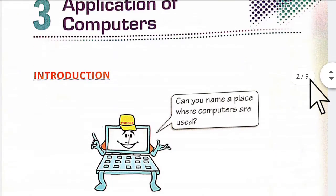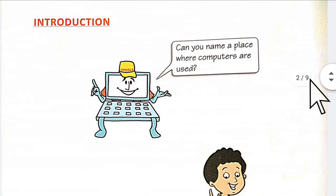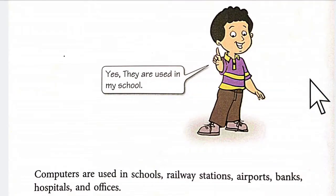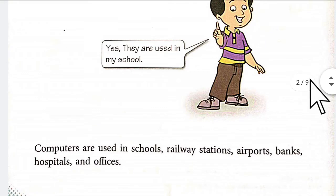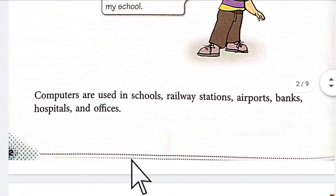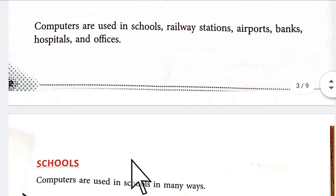Can you name a place where computers are used? This computer is asking the child to name places where the computer is used. Computers are used in schools, railway stations, airports, banks, hospitals, and offices. Nowadays computers are used in most all fields.